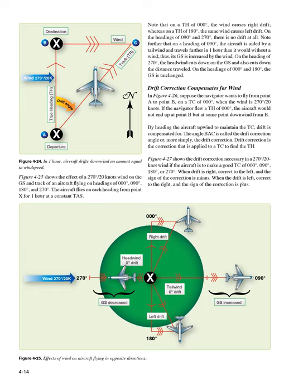Drift correction compensates for wind. In Figure 4-26, suppose the navigator wants to fly from point A to point B on a TC of 000° when the wind is 270°/20 knots. If the navigator flew a TH of 000°, the aircraft would not end up at point B but at some point downwind. By heading the aircraft upwind to maintain the TC, drift is compensated for. The angle BAC is called the drift correction angle. Drift correction is the correction applied to a TC to find the TH. Figure 4-27 shows drift corrections for various TCs in a 270°/20-knot wind.